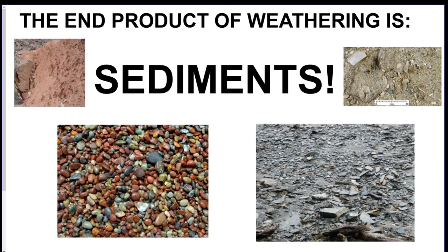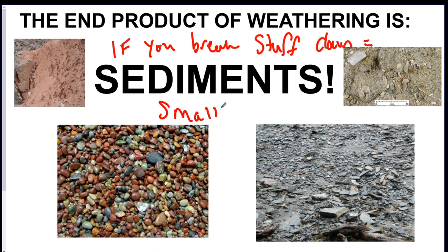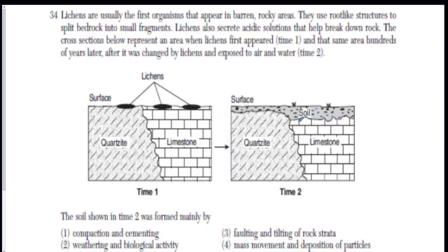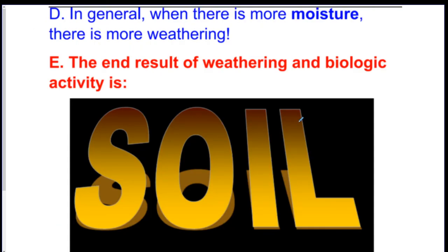The end product of weathering is sediments. If you break stuff down, you get small pieces of rock. This is going to lead us into what we're going to be talking about next, which is soil. If you have a lot of broken down material and a lot of biological activity — which is essentially life — you're going to create a lot of soil.